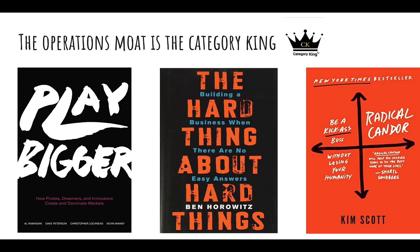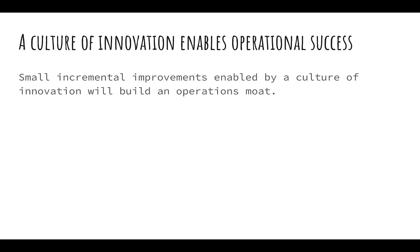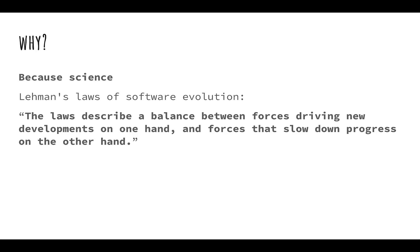Let's get back to the operations moat and why it's the category king of all these moats. If you read any of these three books — must-reads in the technology space — you'll quickly realize that the companies built by these people relied heavily on making small incremental improvements to massively scale their business and support hundreds of engineers. It's really difficult to get engineers to contribute to code in a productive way when scaling to hundreds or thousands. The operations moat enables a culture of innovation for decades.